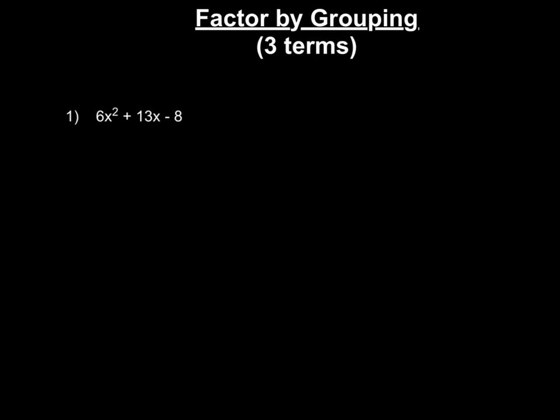All right, so let's now talk about factor by grouping. Today we're just going to talk about it where we have three terms, right, where we have a trinomial. So when we're going to use factor by grouping with a trinomial is when your leading coefficient is anything other than positive 1. So even if it's negative 1, anything other than positive 1 is where you're going to use this.